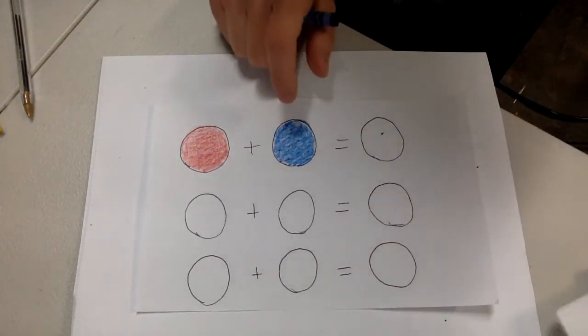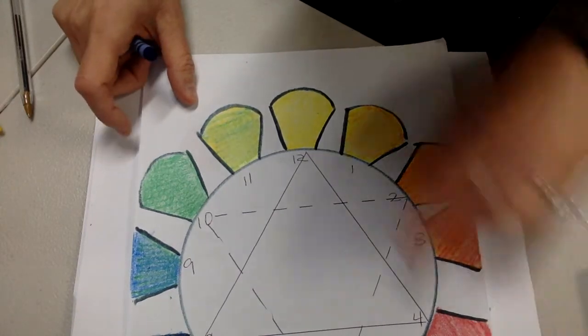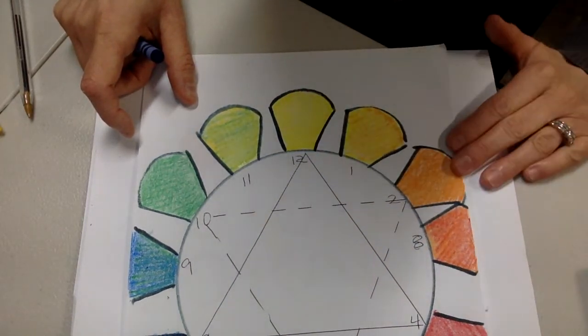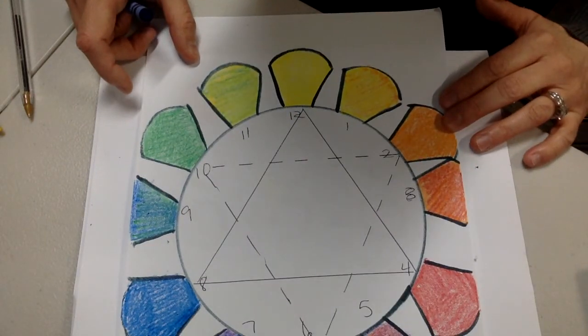Red mixed with blue equals what? Remember how we read the color wheel. You find your primary colors, for instance, yellow and red, and then you find the color that's between it to answer it.